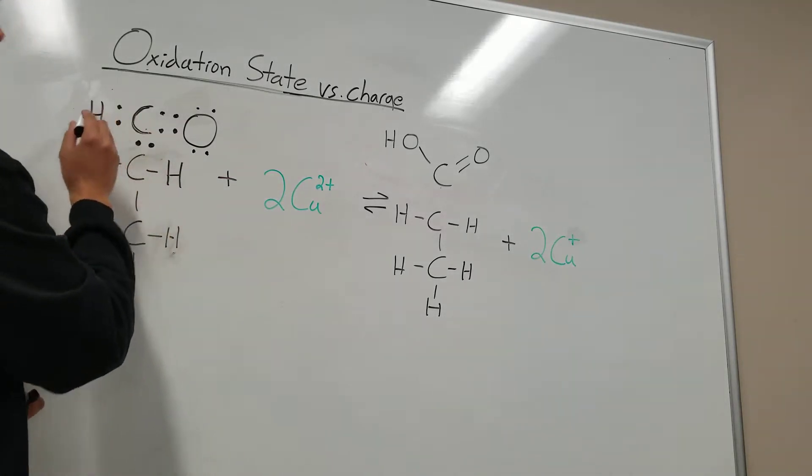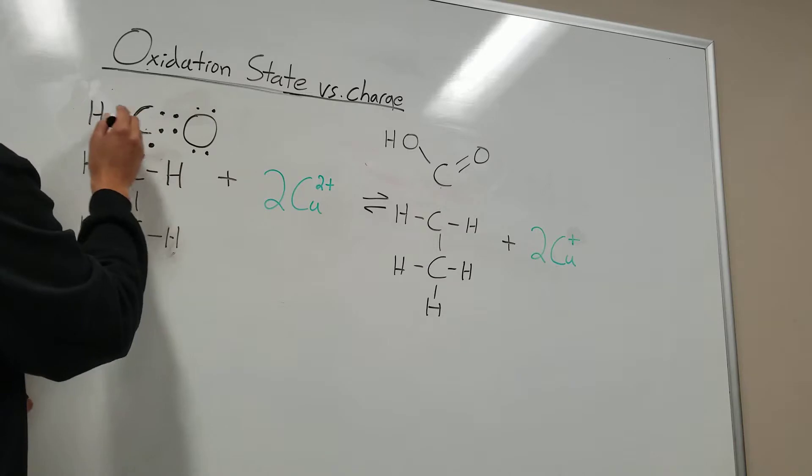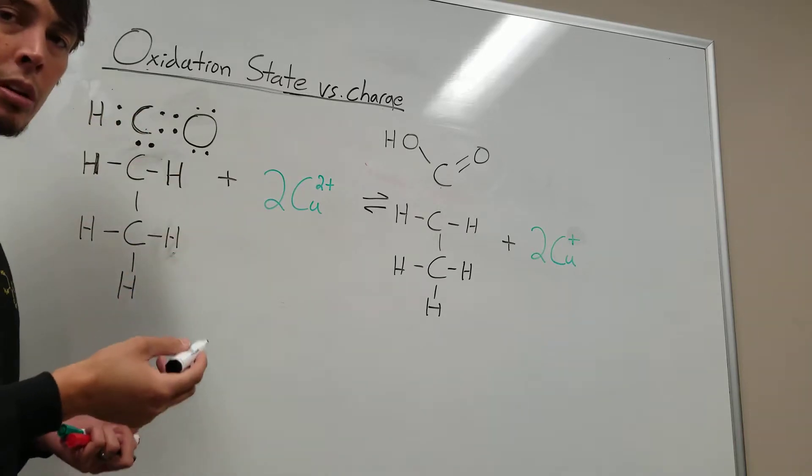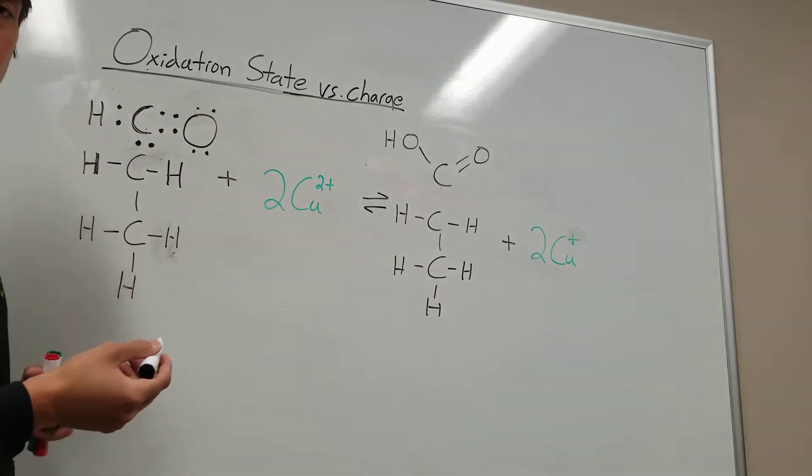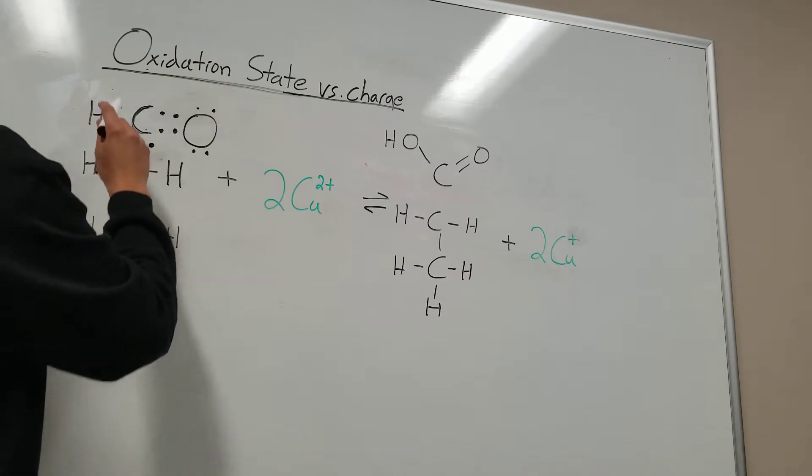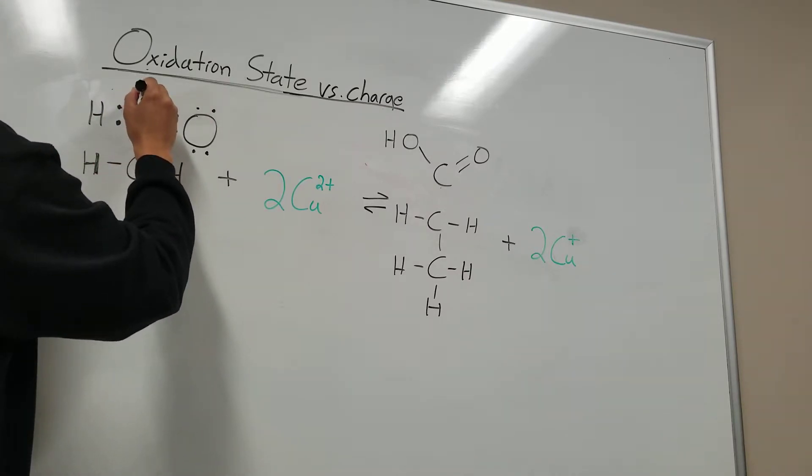We'll start with the hydrogen. Between carbon and hydrogen, which one is the more electronegative? The answer is the carbon. So we're going to assign these electrons to carbon.